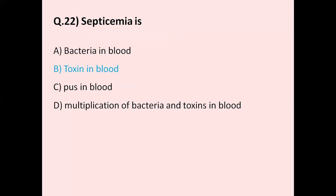Question number 22: Septicemia is also known as blood poisoning and occurs when bacteria, virus, or fungus enters the bloodstream. Options are — option A bacteria in blood, option B toxin in blood, option C pus in blood, option D multiplication of bacteria and toxin in blood. The correct answer is option B, toxin in blood.